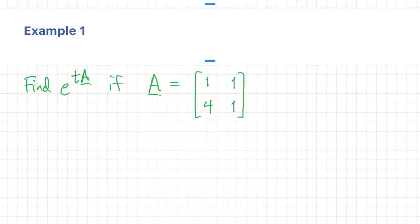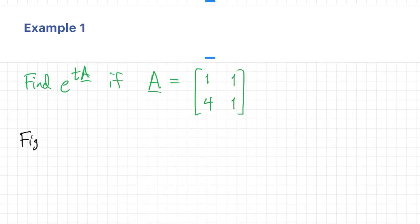As an example, let's find the matrix exponential of this two by two. By now, I think you're comfortable working out the eigenvalues and the eigenvectors, so I'll just write them out.